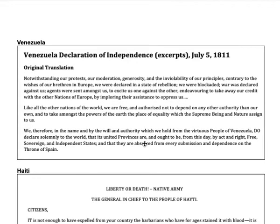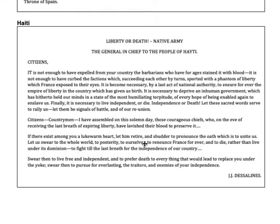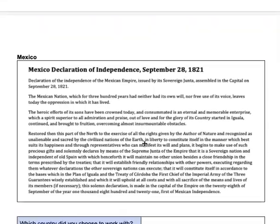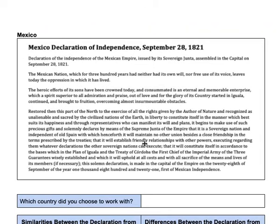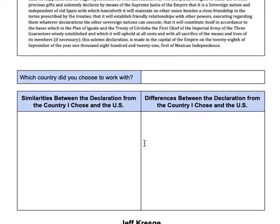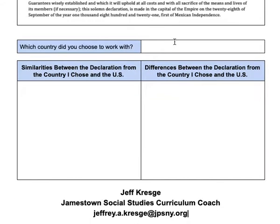What follows is Venezuela's Declaration of Independence, Haiti's Declaration of Independence, and Mexico's Declaration of Independence. I want the kids to tell me which country they chose to work with, what is similar between that country and the U.S. Declaration, and what is different from their country and the U.S. Declaration.